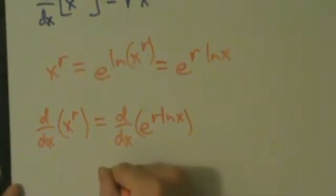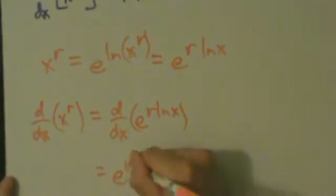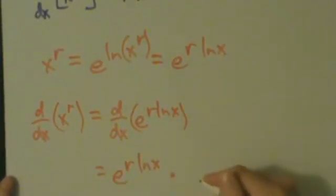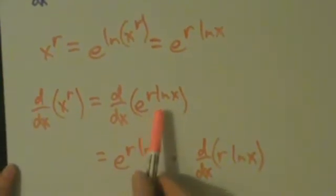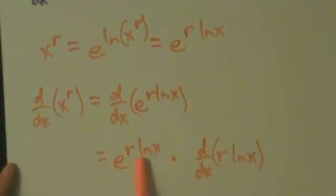So remember, the derivative of e to a thing is just e to that thing times the derivative of that thing. Alright, let's leave some space and we'll say times d/dx of r*ln(x). Okay, so again, the derivative of e to a thing is just e to that thing times the derivative of that thing. In this case, that thing is r*ln(x), alright?